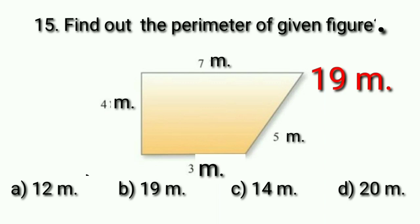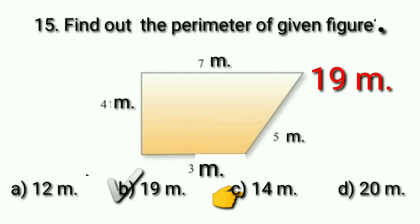Option A is 12 meters, which is not correct. Option B is 19 meters — it is correct, so we will put a tick at option B. Option C is 14 meters, which is not correct. Option D is 20 meters, which is also not correct.